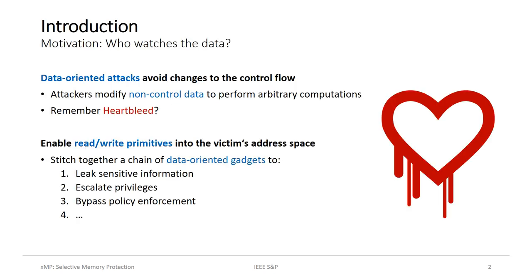Data-oriented attacks have become a serious threat. They completely avoid changes to the control flow. Instead, they modify non-controlled data to perform arbitrary computation. This makes them highly difficult to detect. For instance, back in 2014, the Heartbleed bug of the OpenSSL library showed us the true potential of such attacks. This attack disclosed an immense amount of sensitive information without leaving any traces behind. Because of this, data-oriented attacks have to be taken seriously.